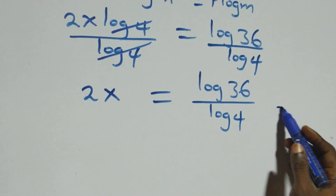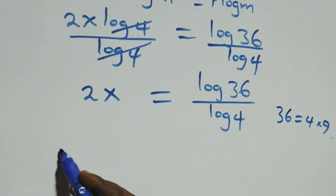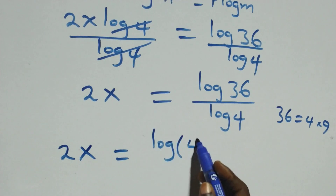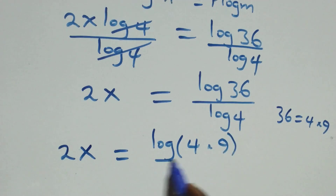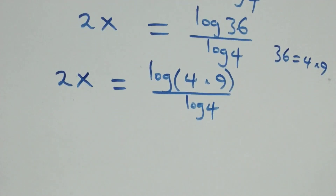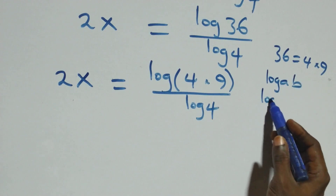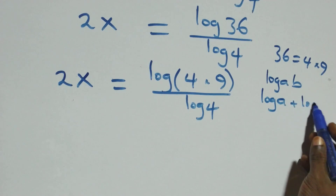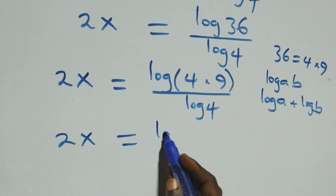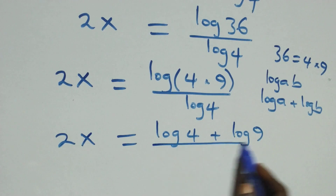The next step here, we have 2x equals to log(4 times 9) over log 4. This follows from the logarithm rule: when we have log(a times b), this is the same thing as log a plus log b. So this becomes 2x equals to log 4 plus log 9, all over log 4.